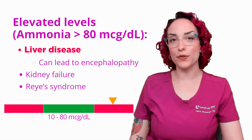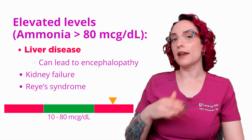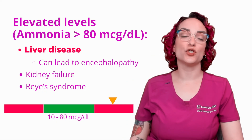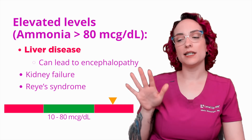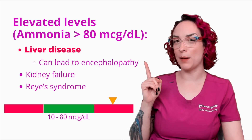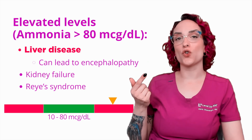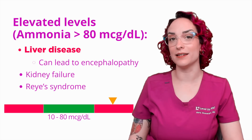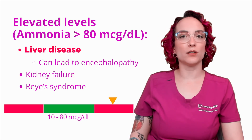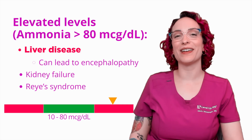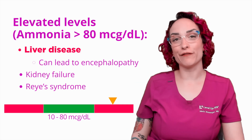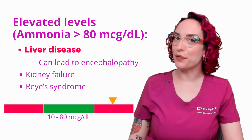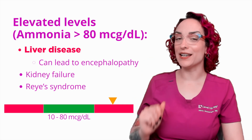Another thing unique about this lab draw is that at my facility it is drawn on its own lavender top tube. So I need to anticipate — if I see a patient where I think this could be hepatic encephalopathy — I'll go ahead and draw a second lavender top tube so that I'm ready to send it down if that's what the doc wants. Draw that second lab tube and find out if your facility requires it to be sent on ice, because if I draw that lab tube and I think it's going to be used for an ammonia, I need to put it on ice right away.